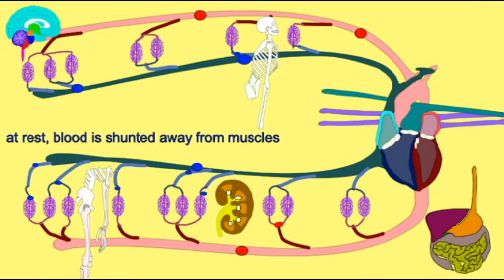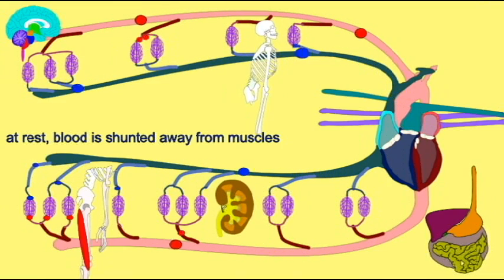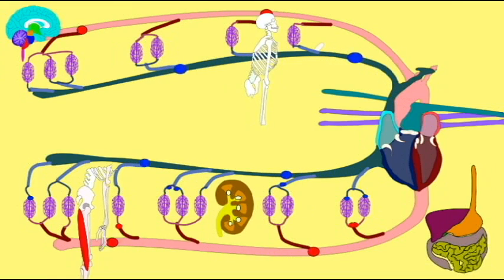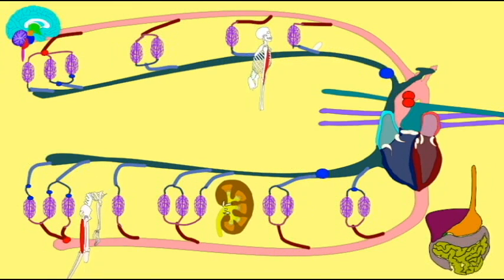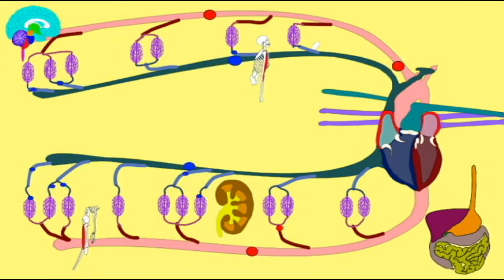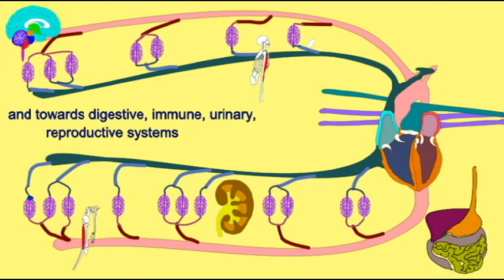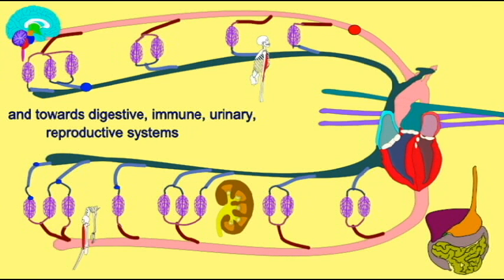At rest, the parasympathetic division limits the amount of blood sent to muscles. Instead, maximal blood is provided to the kidneys to produce urine, to the digestive system so food may be digested, and to the immune and reproductive systems.